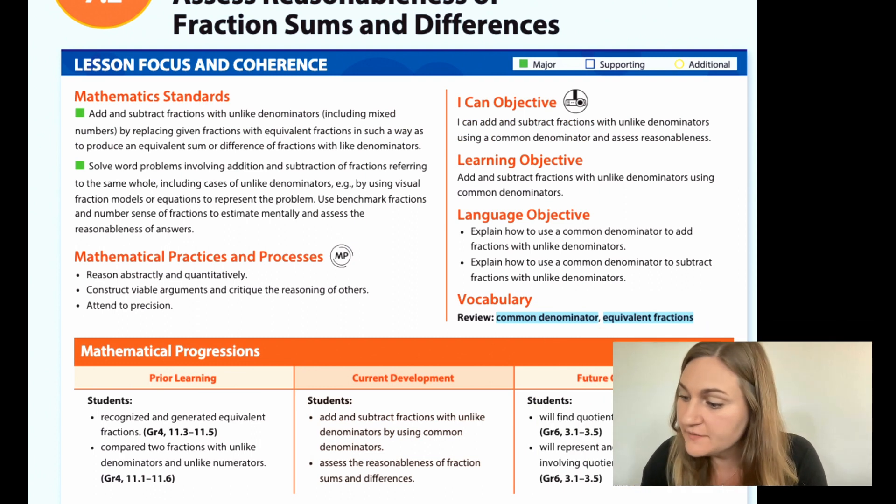I want to start off with the I can objective. Here it says I can add and subtract fractions with unlike denominators using a common denominator and assess reasonableness. The learning objective says add and subtract fractions with unlike denominators using common denominators.